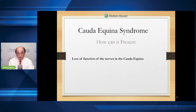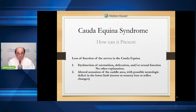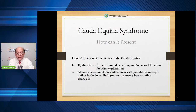Now that we understand where the cauda equina is, what its structure looks like, and what causes cauda equina syndrome, how do we define it? It is loss of function of the nerves in the cauda equina. Here is a basic definition that many people use. Number one: dysfunction of micturition (urination), defecation (stools), or sexual dysfunction with no other explanation. Number two: altered sensation in the saddle area with possible neurologic deficits in the lower limbs — motor, sensory, or reflex changes. You can see how these two areas parallel perfectly with the cauda equina anatomy. Down in the lower sacral area is where you approach urinary, bowel, and bladder control — one of the hallmarks of cauda equina is that loss of bowel and bladder.